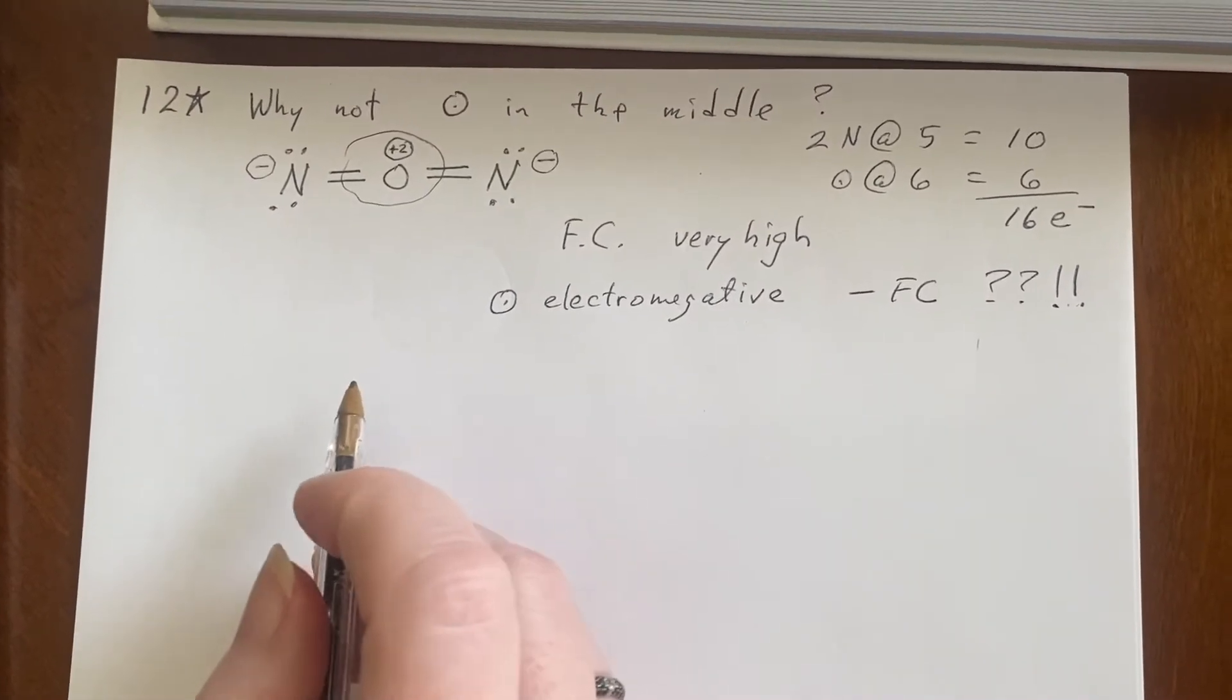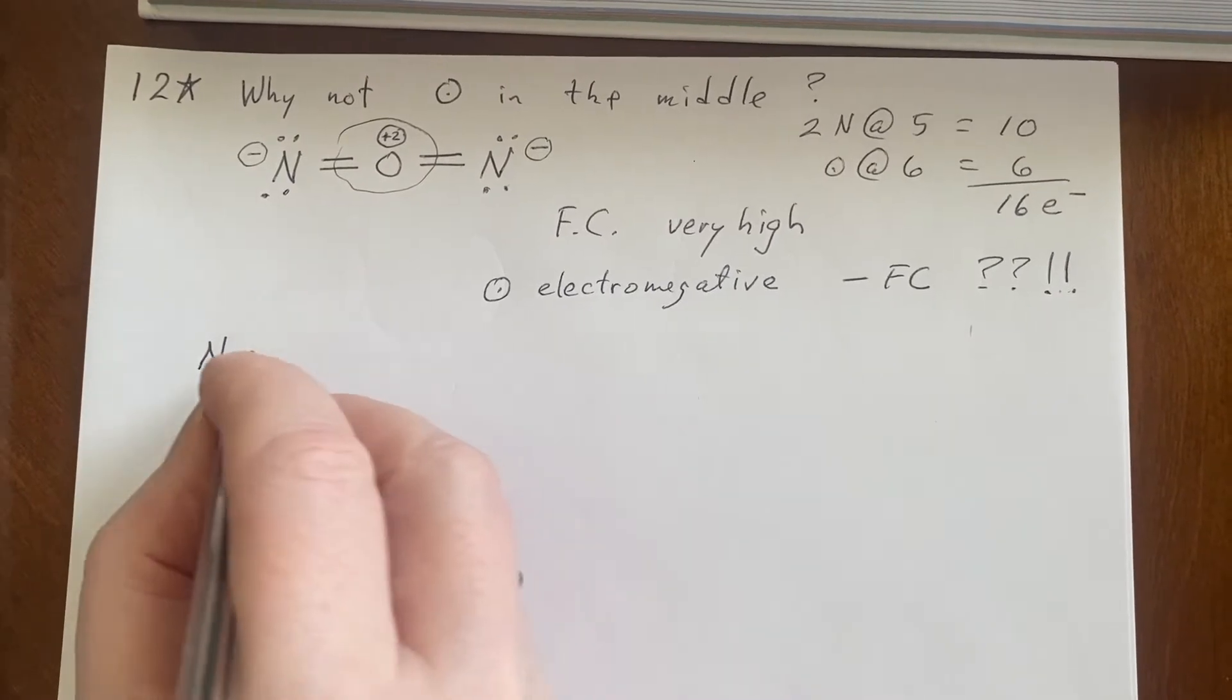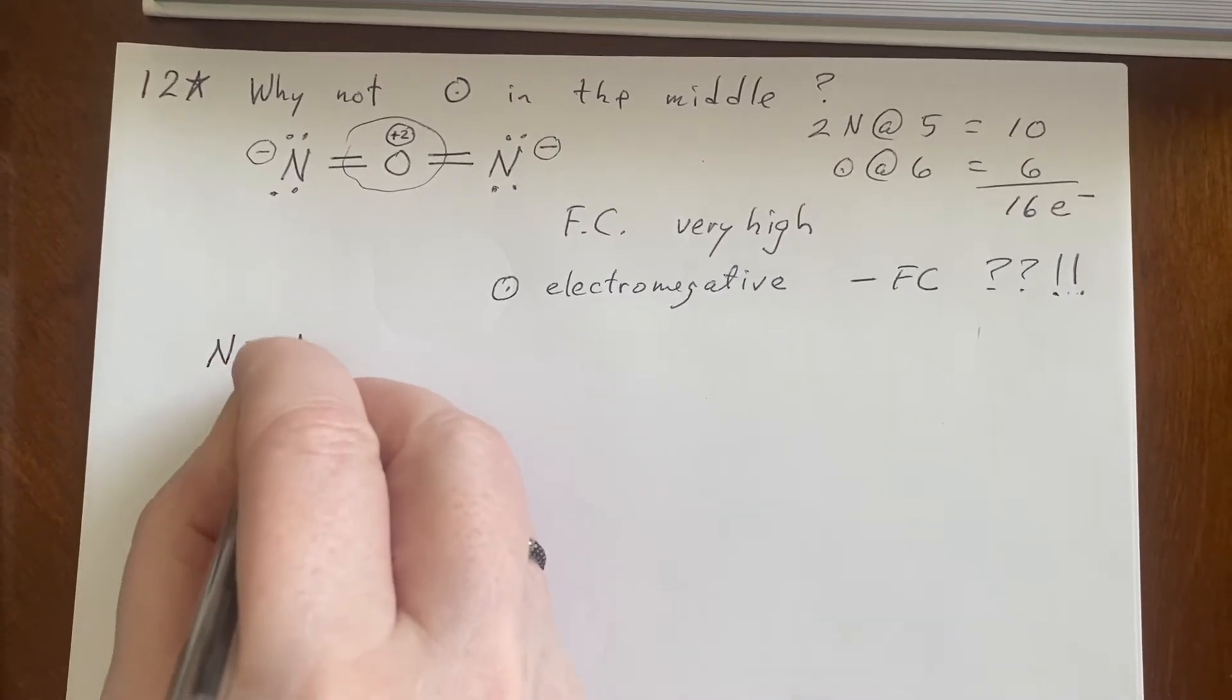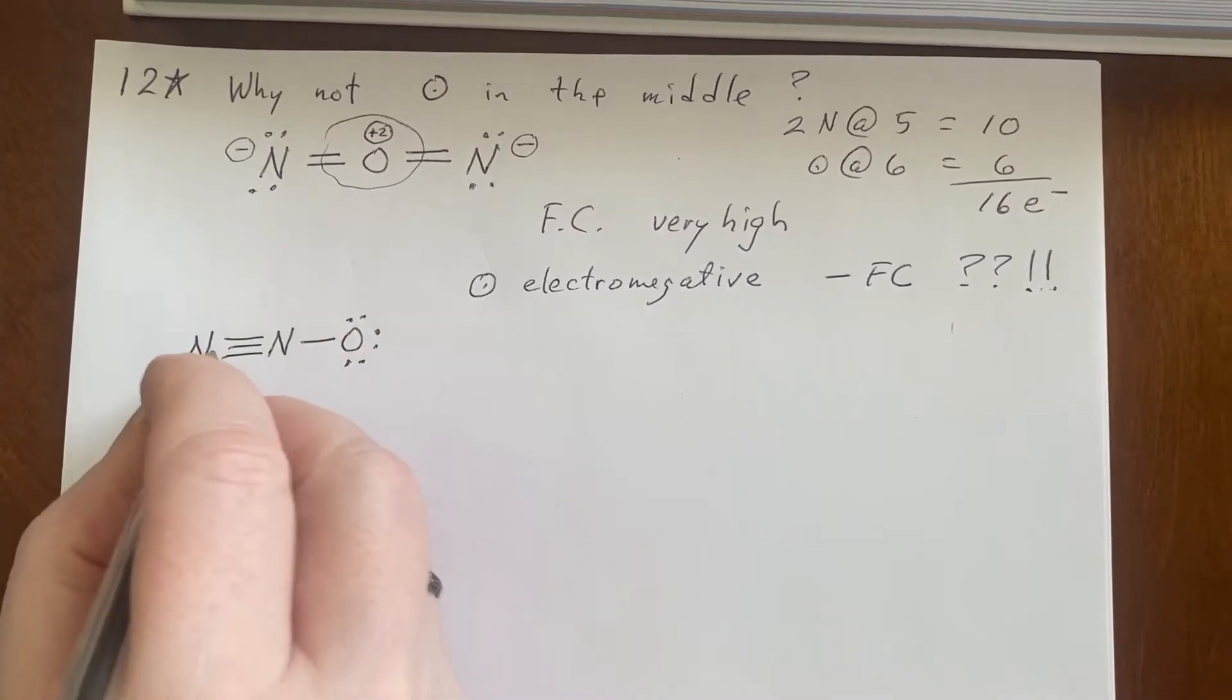So when you consider that Oxygen is electronegative compared to the Nitrogen, it should have the negative formal charge. It didn't happen. Darn it. So this is just not an option. So we're just going to go ahead and work with these that were developed up here.